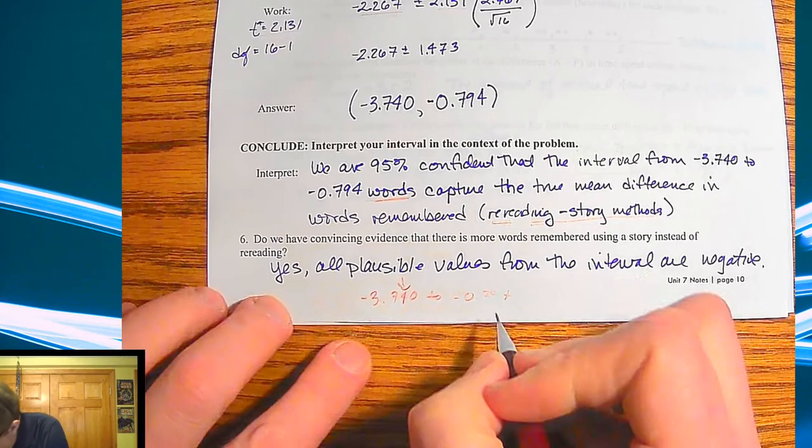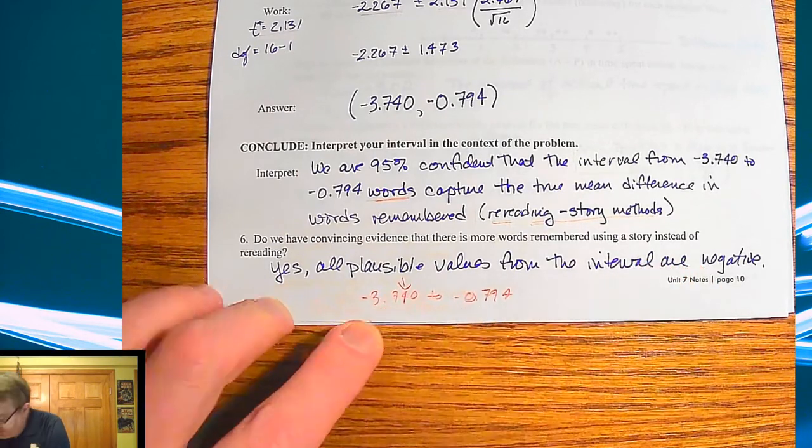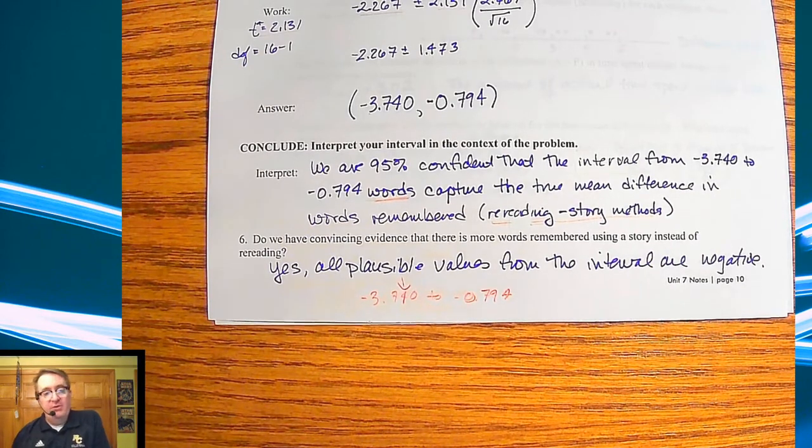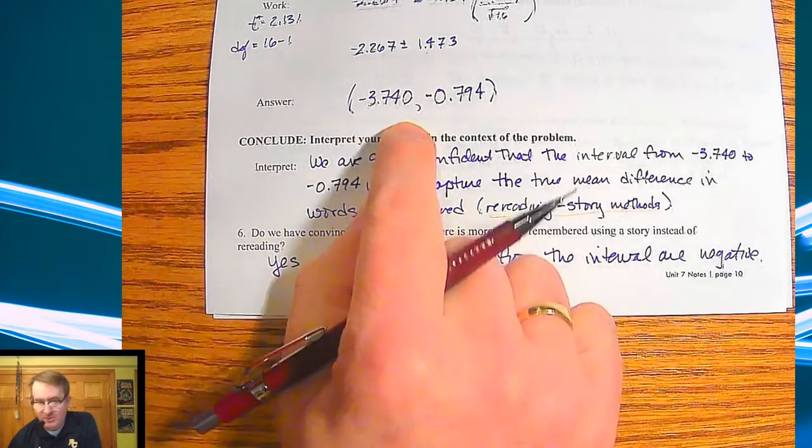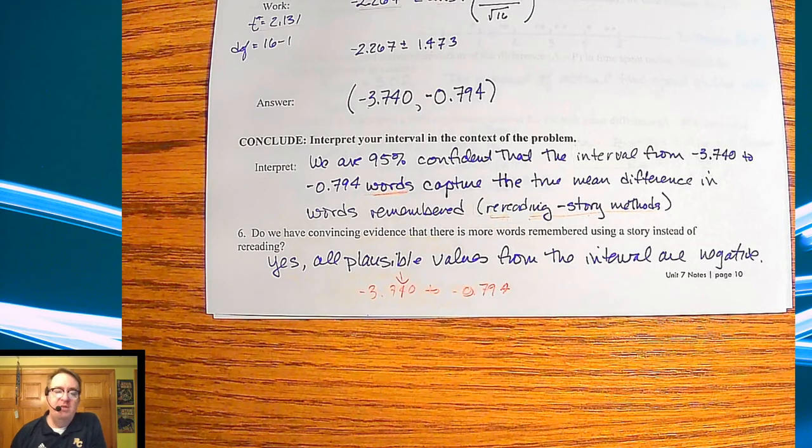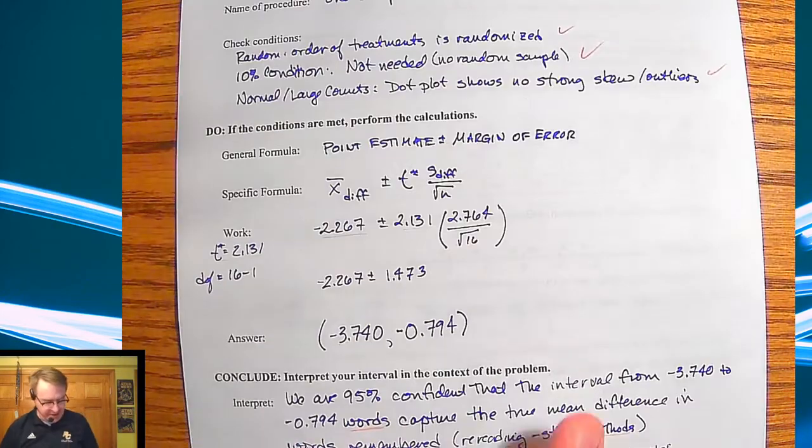Why? Because all plausible values, which is here, plausible values is from negative 3.740 to negative 0.794. And since it doesn't cross zero, they're on the same side. That means that whichever method is going to be the negative one, which in this case here would be the story method, would mean that that has significant evidence for that one. Okay.